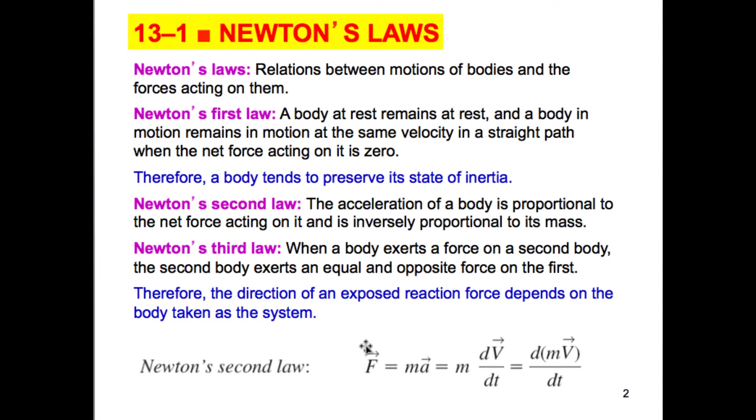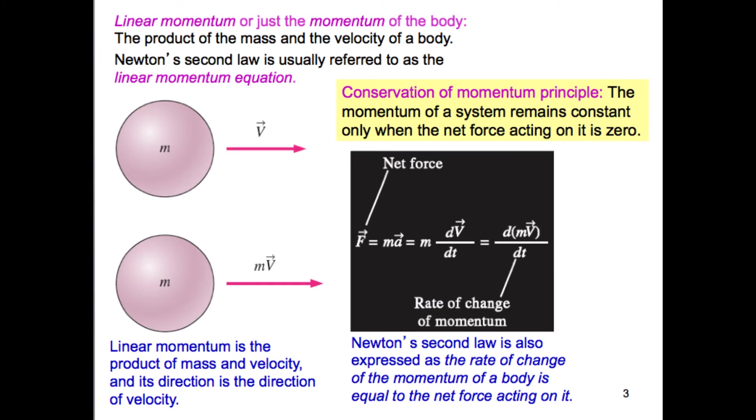But this is a familiar formula, the sum of the forces is equal to mass times acceleration. Now we can rewrite acceleration as the change in velocity with time, and if we include the mass inside of our derivative here, we would have now the conservation of momentum. Momentum is mass times the velocity.